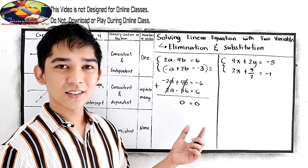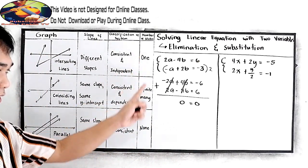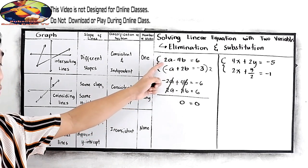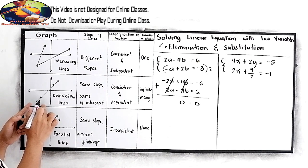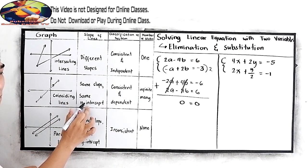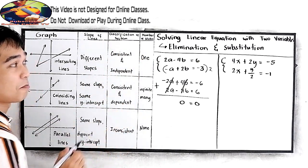So that gives us infinite many solution. If we're going to graph the two, the equation 1 and the equation 2, this will be our graph. So they have the same slope and the same y-intercept. And for the classification of system, consistent and dependent.